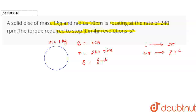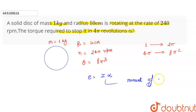Now let's see. Initially when it is rotating, we have to stop it in 4π revolutions, so the final angular velocity is 0. We have to calculate the torque. Tau is equal to I times alpha, where I is the moment of inertia.